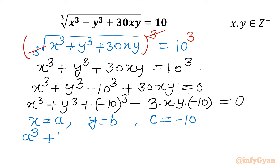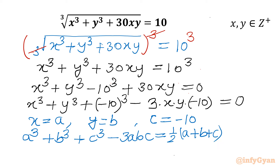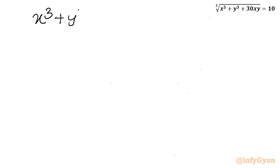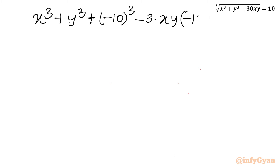The identity is: a³ + b³ + c³ - 3abc = ½ · (a + b + c) · [(a - b)² + (b - c)² + (c - a)²]. Now you can see if I apply x = a, y = b, and -10 as c, then I can write our LHS using this identity: x³ + y³ + (-10)³ - 3 · x · y · (-10) = 0.